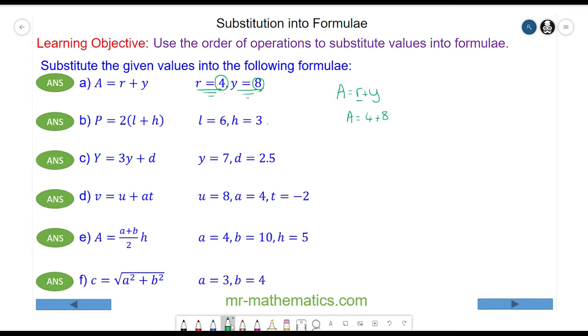Question b: p equals two lots of l plus h. This means two multiplied by l plus h. So using the order of operations, we do the brackets first, and l is given as 6, h is given as 3.